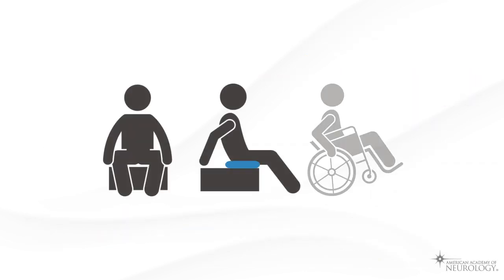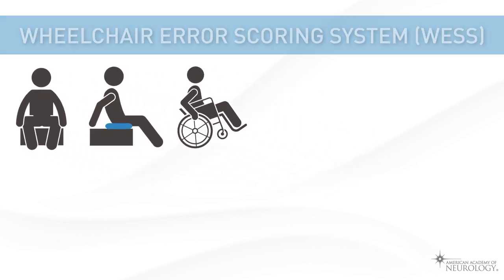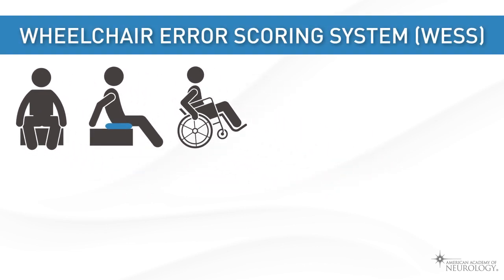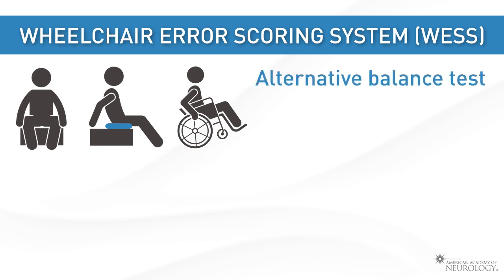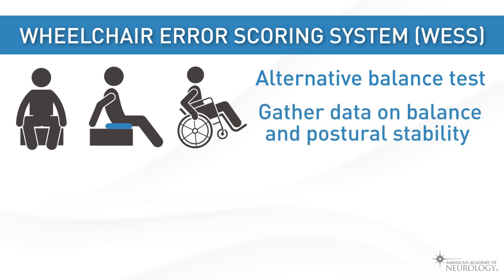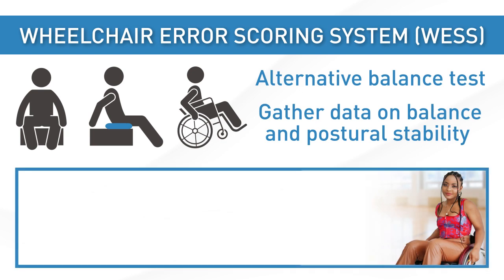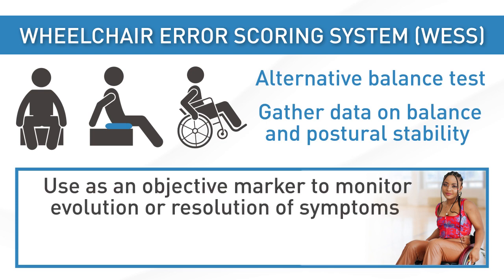Innovative tests have also been created to assist concussion assessment in athletes with a prior disability. The Wheelchair Error Scoring System, or WESS, provides an alternative balance test and allows a clinician to obtain quantitative data on the balance and postural stability of wheelchair users. While Layla may not have baseline WESS data when she presents to your clinic, this is an objective marker that you can trend over interval assessments to monitor evolution or resolution of Layla's symptoms post-injury and grade her return to play.